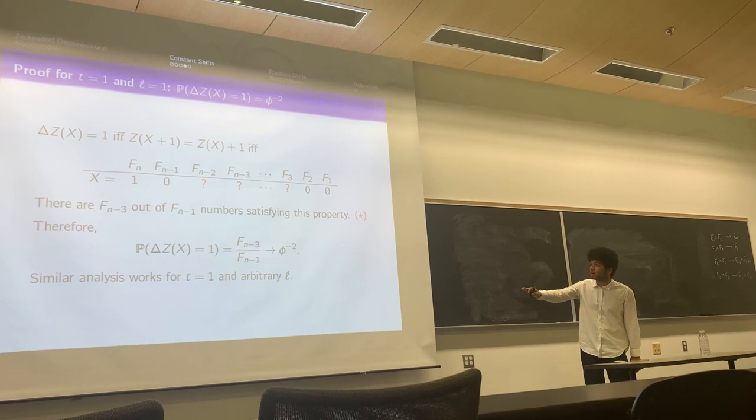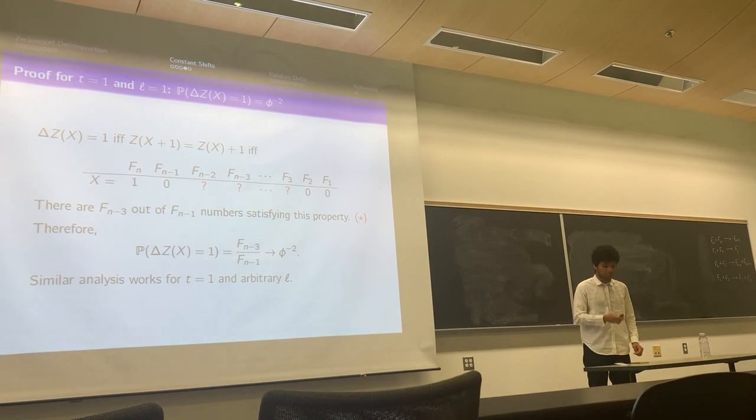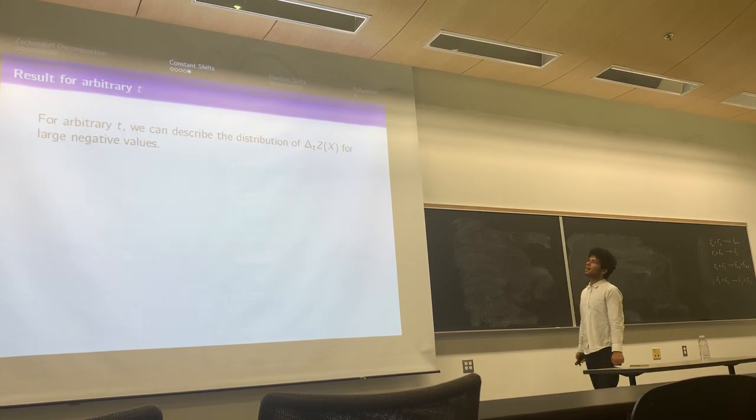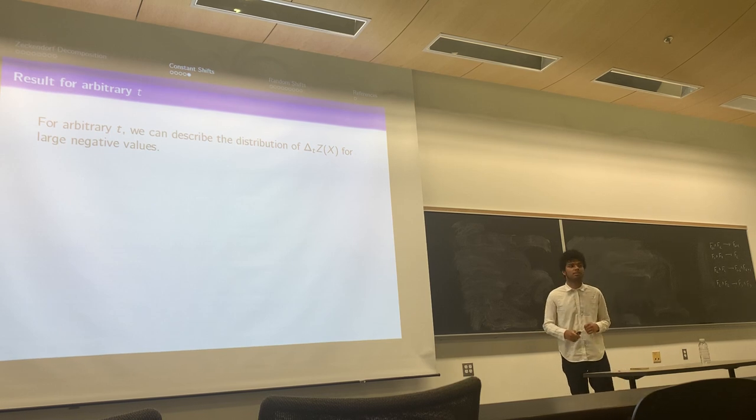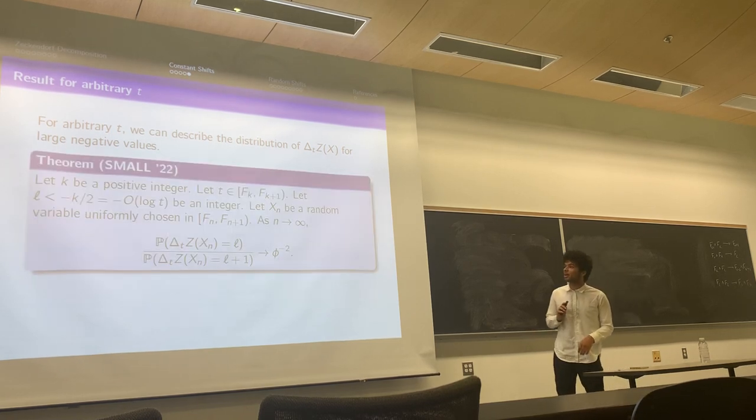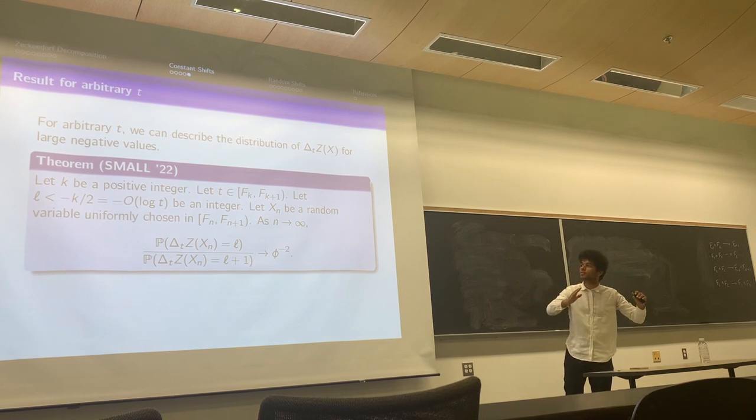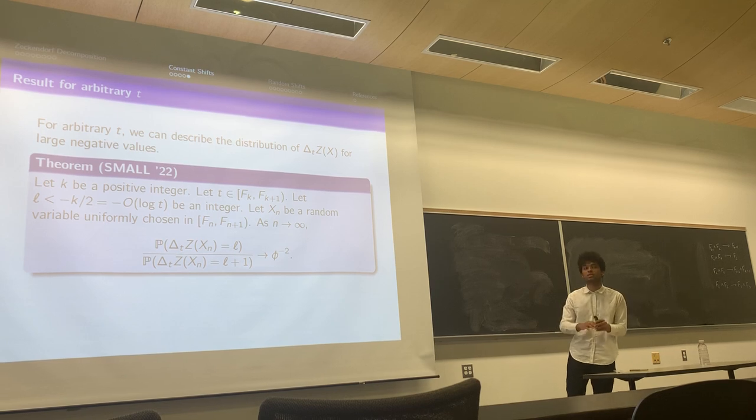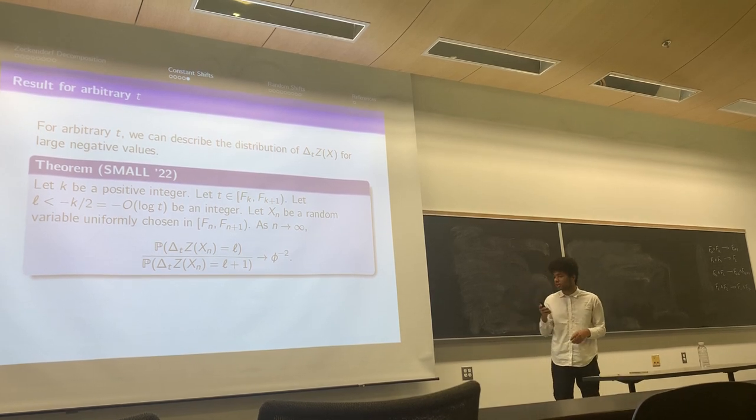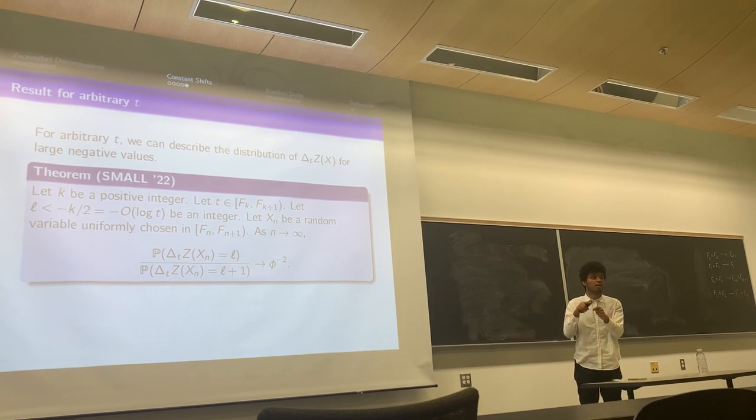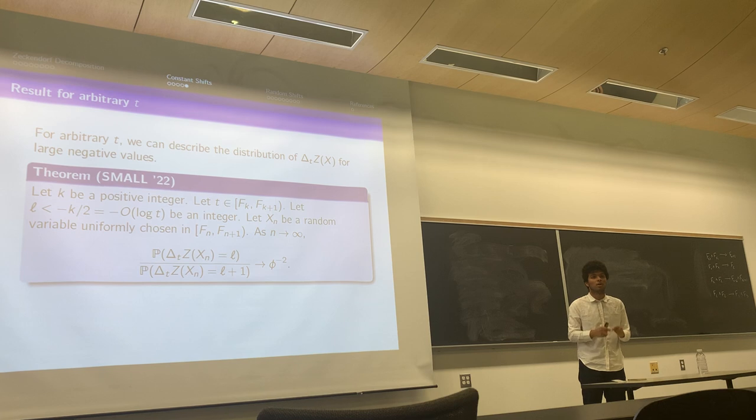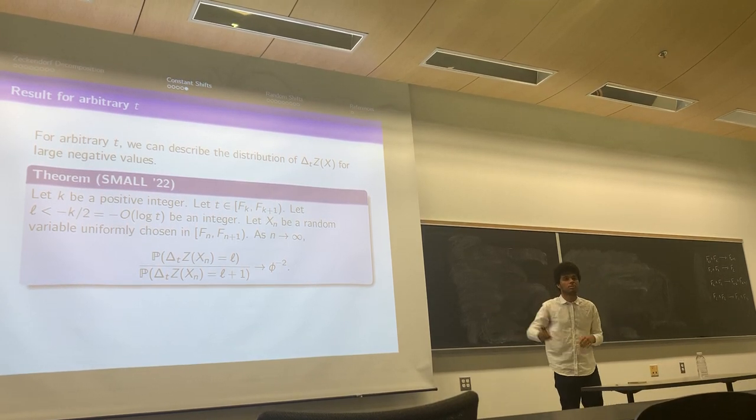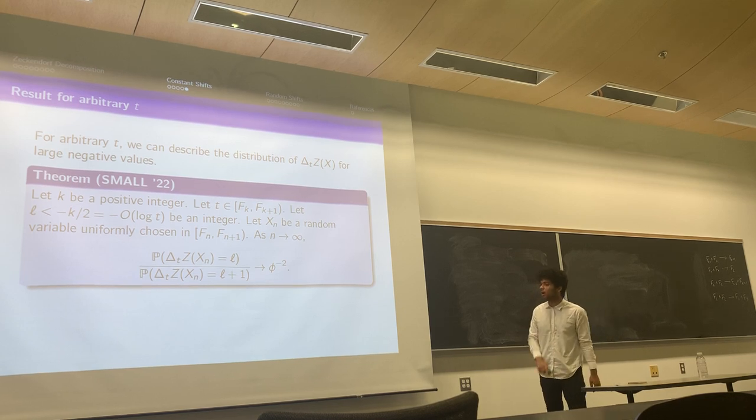Just to simplify things and making things bigger, when n goes to infinity, we have a fixed number and this number is going to be φ⁻². Very similar scenario is going to work for T equals one and any other value of L. For any other values of T, we cannot precisely describe the distribution the same way that we did, but we have proved that if we go far enough, just a little bit far enough, so T is between Fₖ and Fₖ₊₁, we just need to go k over two far enough to make sure that the ratio of consecutive things is still φ⁻². We don't know what happens in the middle of the distribution, but in the tail of the distribution, it still portrays this geometric behavior.